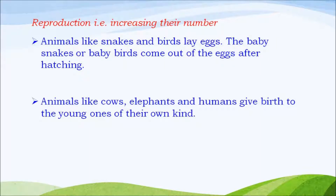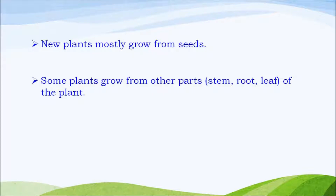Reproduction: animals like snakes and birds lay eggs. The baby snakes or baby birds come out of the eggs after hatching. Animals like cows, elephants and humans give birth to the young ones of their own kind. New plants are mostly grown from seeds. Some plants grow from other parts of the plant as well.